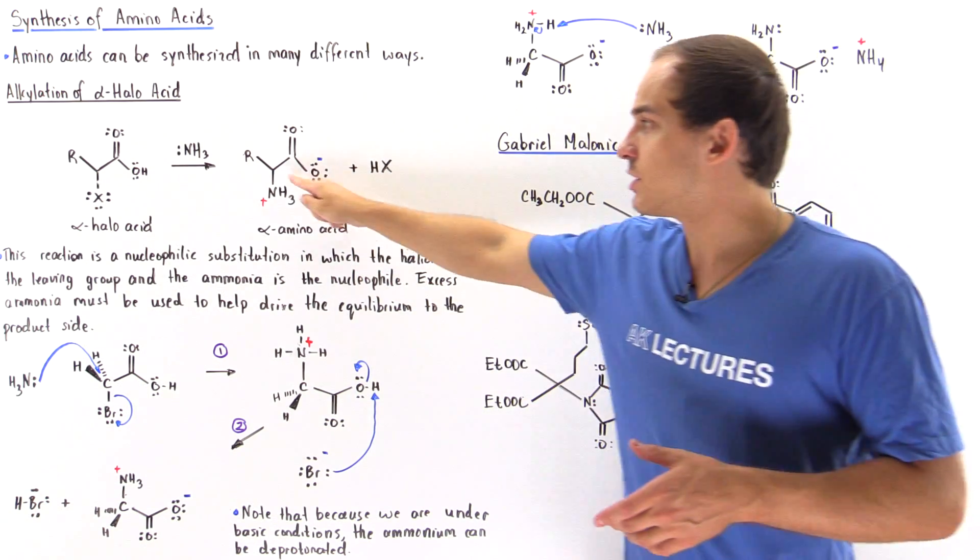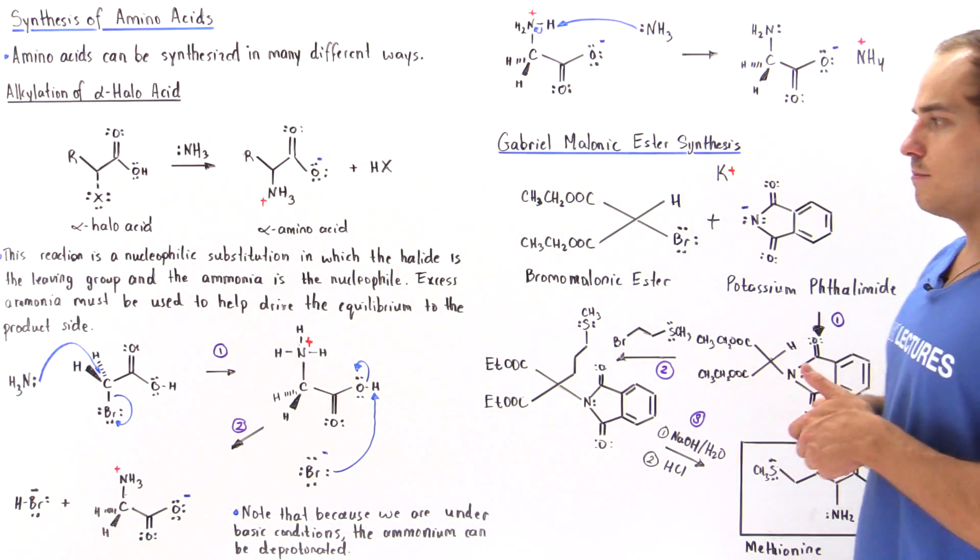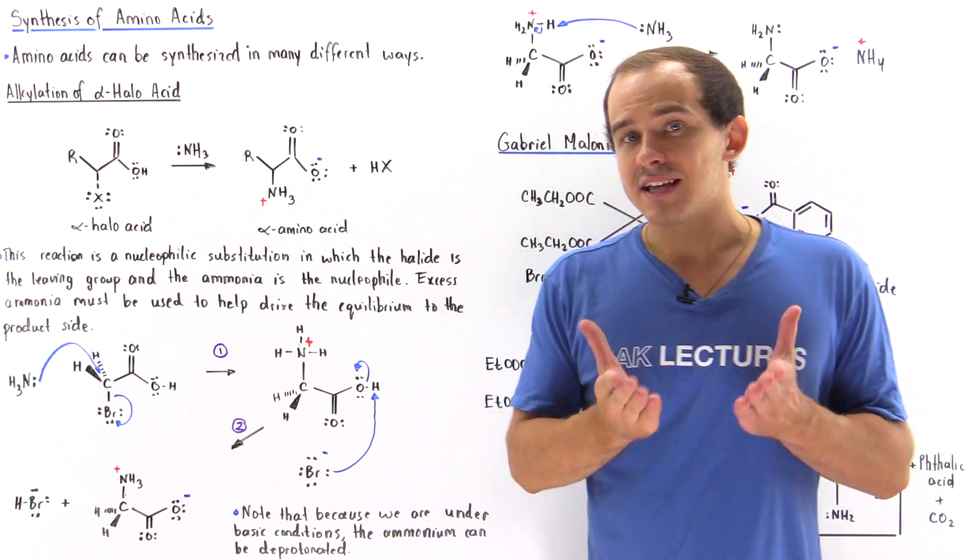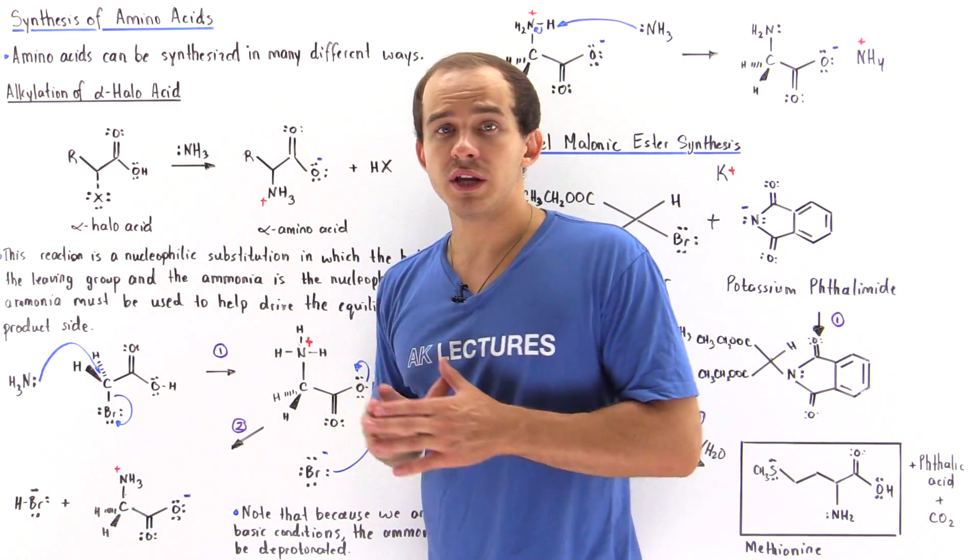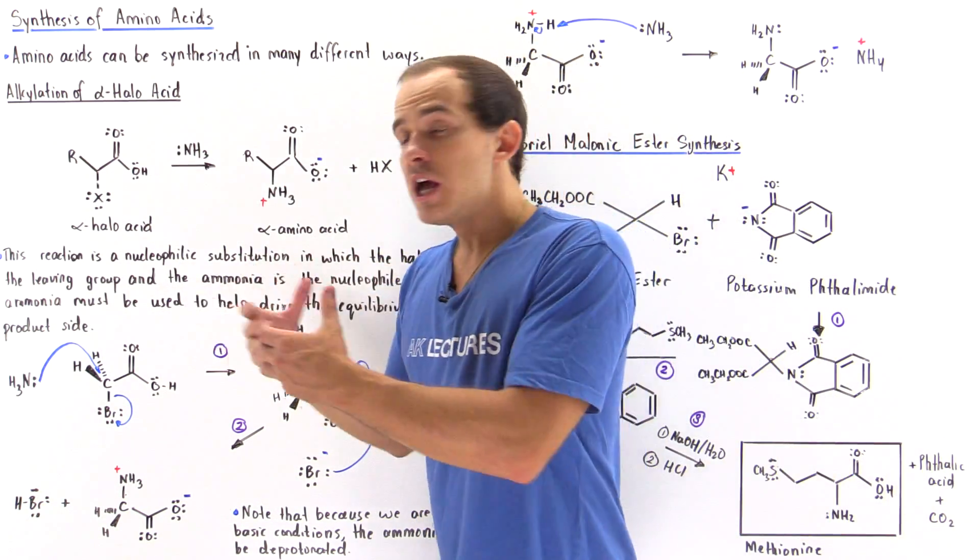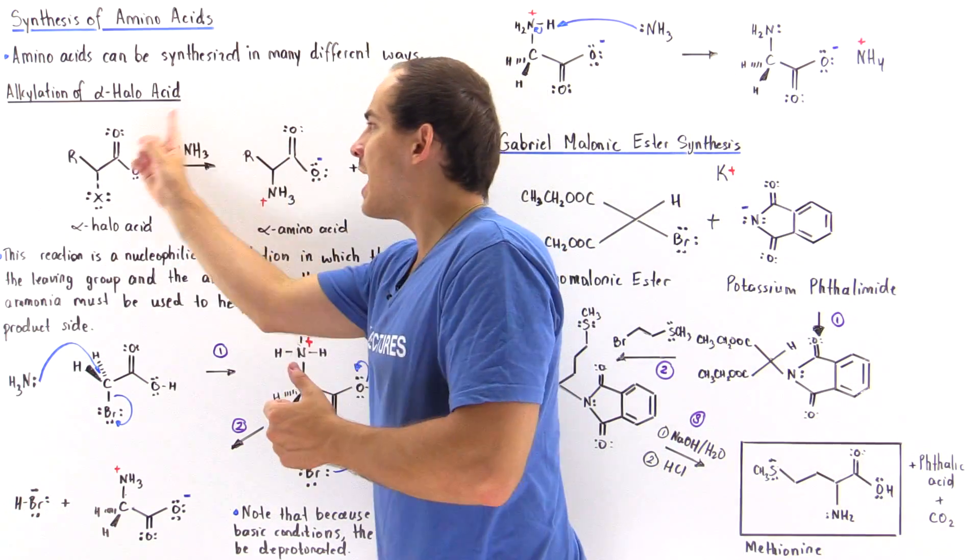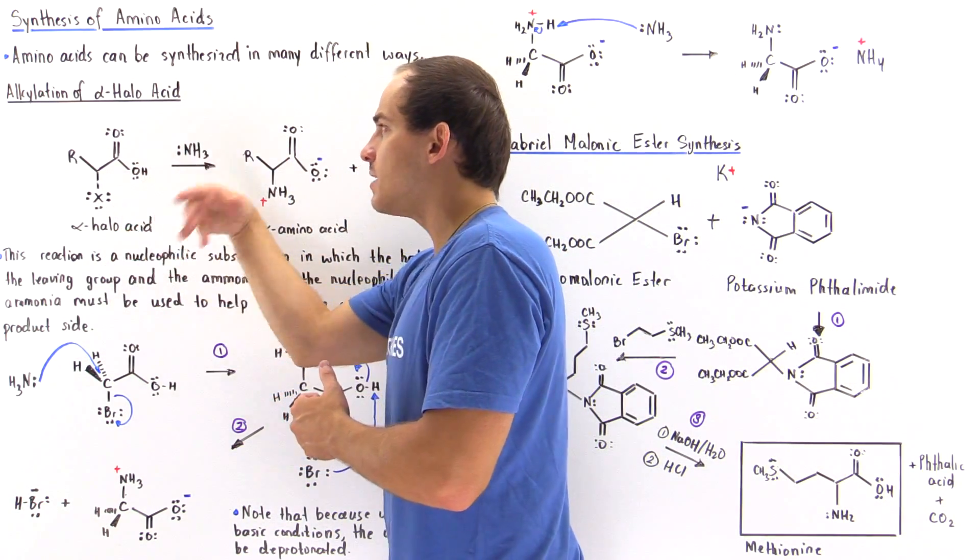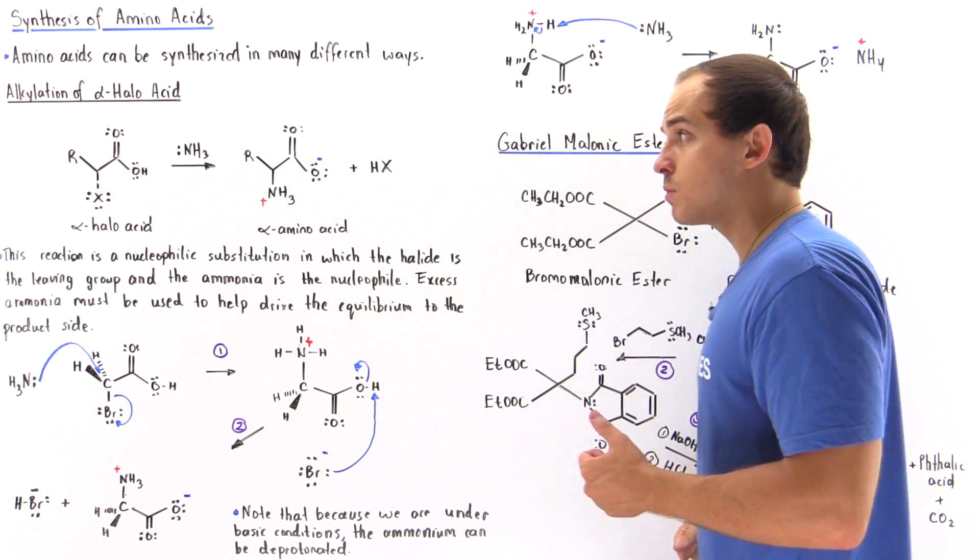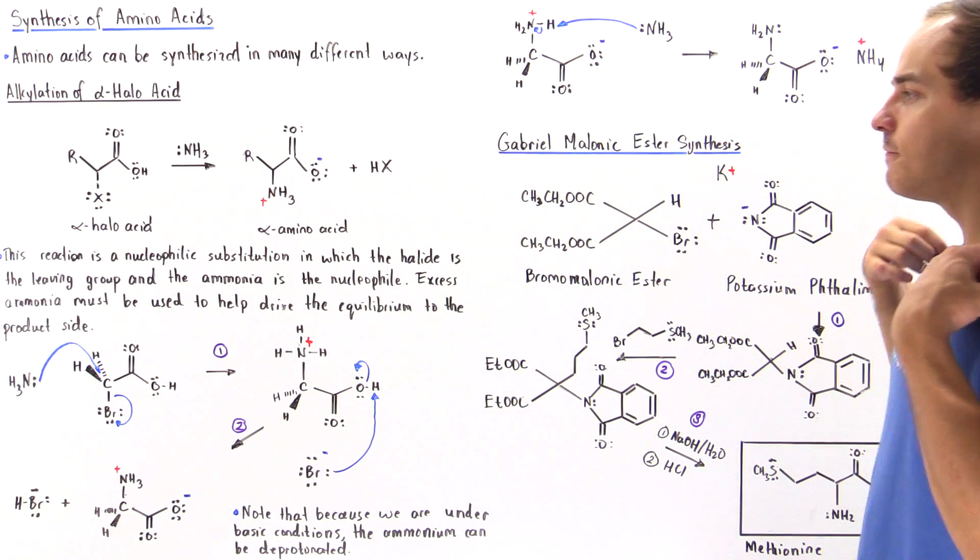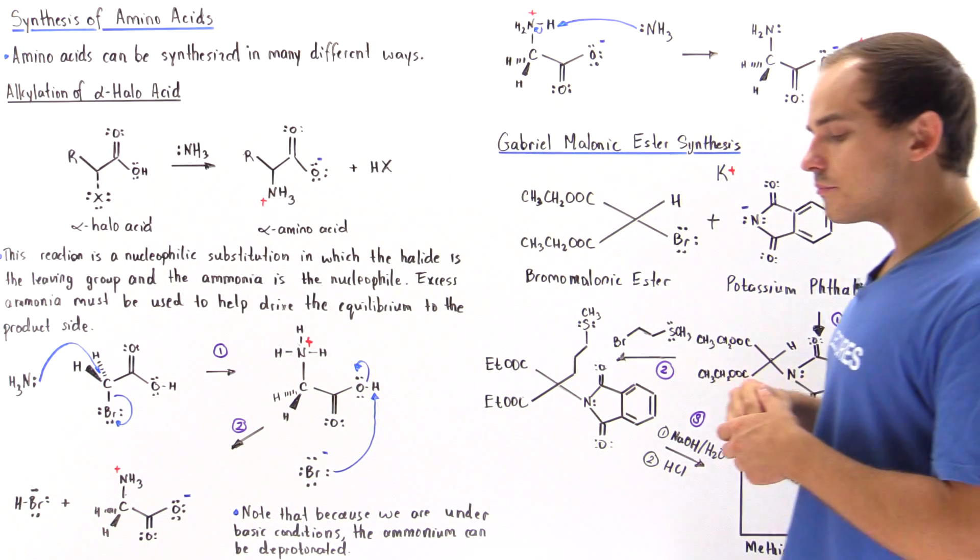So we produce this molecule that contains this amino group. Now, the reason that we have to use excess amounts of ammonia is to basically shift the equilibrium to the product side. Because if we have excess ammonia, and ammonia is our reactant by Le Chatelier's principle, that will shift our reaction towards the alpha-aminoacid side.